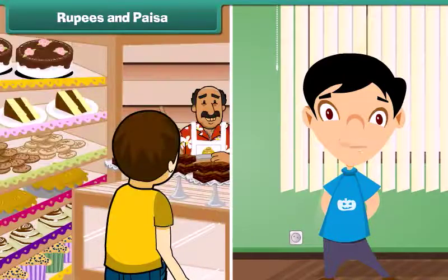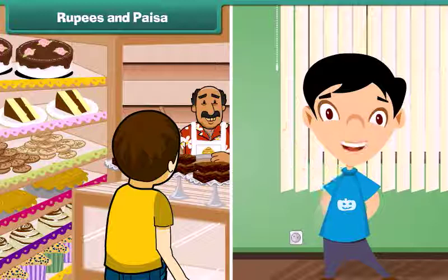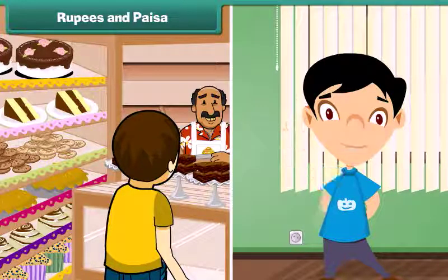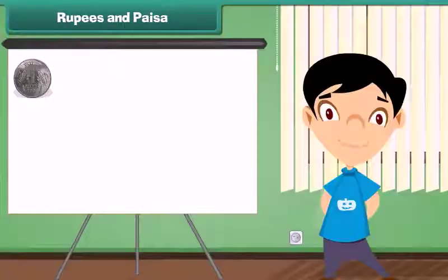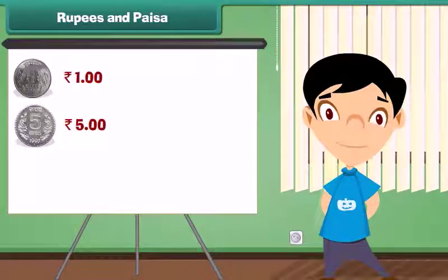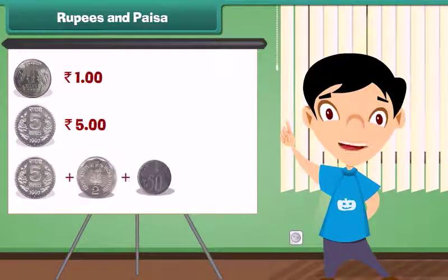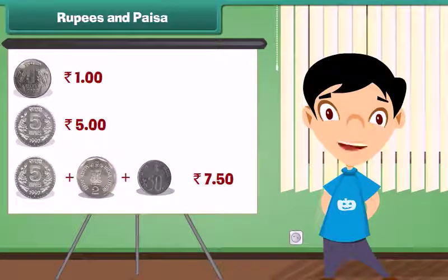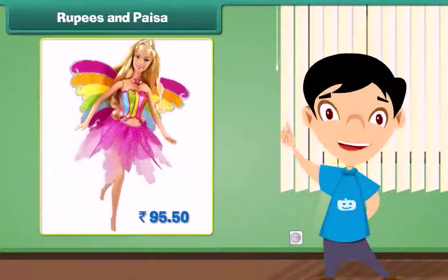When we go to market, sometimes the shopkeeper tells the amount in rupees and paise both. Let me show the correct way to write the price told by a shopkeeper. 1 rupee is written as Rupee 1; 5 rupees is written as Rupees 5.